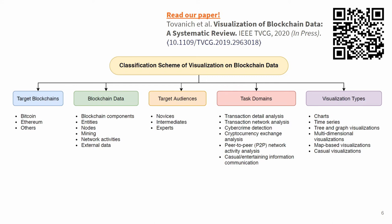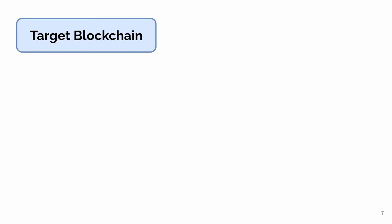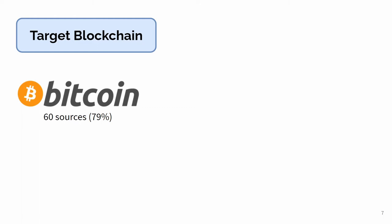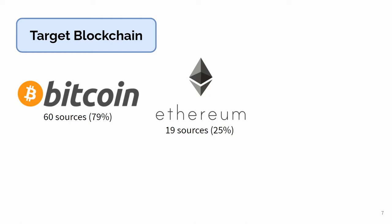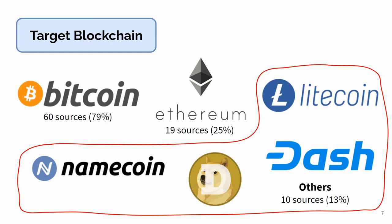For the target blockchain, we found that most existing blockchain visualization tools display data from Bitcoin, because it is the most popular and widely adopted blockchain, followed by Ethereum, another cryptocurrency that can additionally execute smart contracts. Only 13% of visualizations display other kinds of blockchain, such as Litecoin, Namecoin, and Dash. Notice that all target blockchains we found were cryptocurrency blockchains.